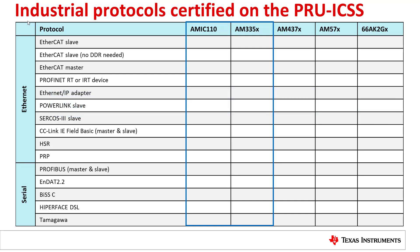Today, these devices cover Profinet RT or IRT device, Ethernet IP adapter, PowerLink Slave, Circos 3 Slave, CC-Link IE Field Basic Master and Slave, HSR, PRP, and Profibus Master and Slave.